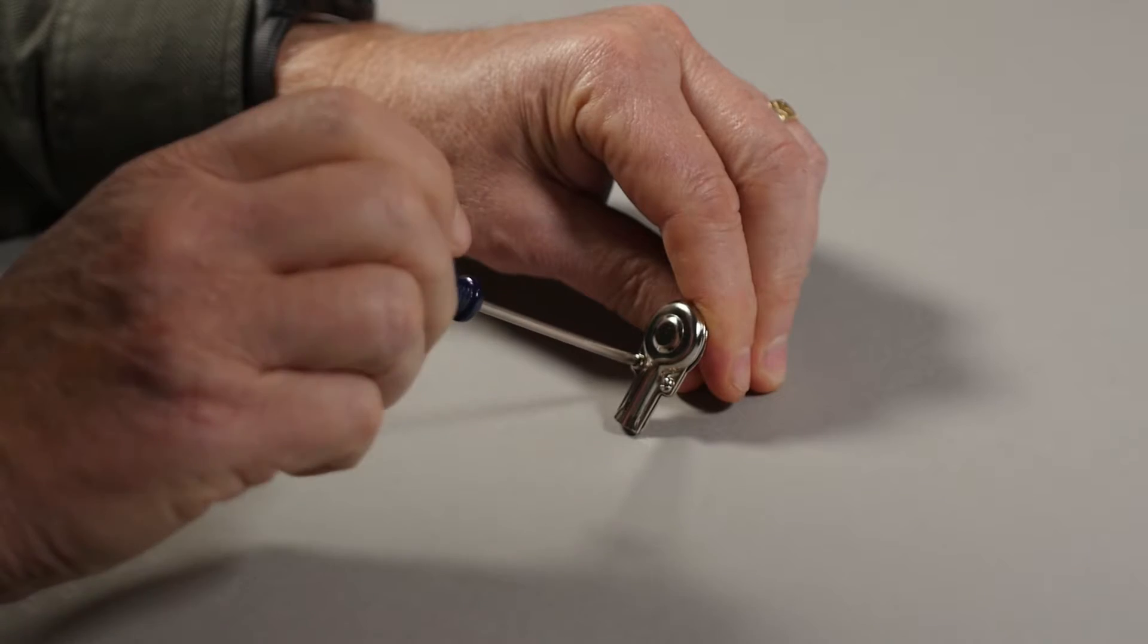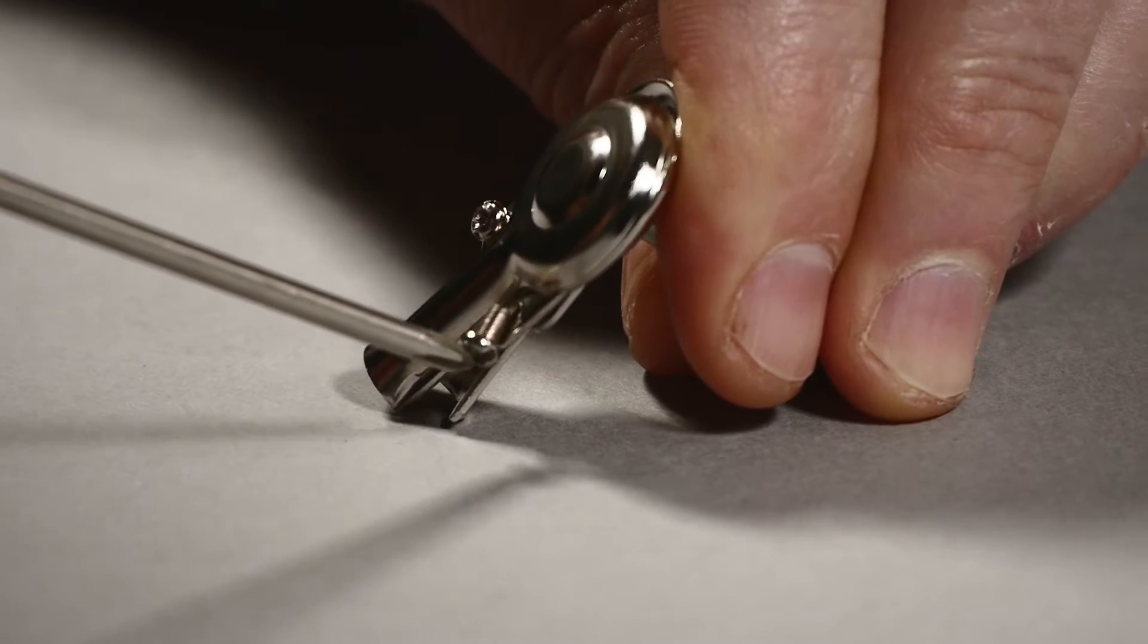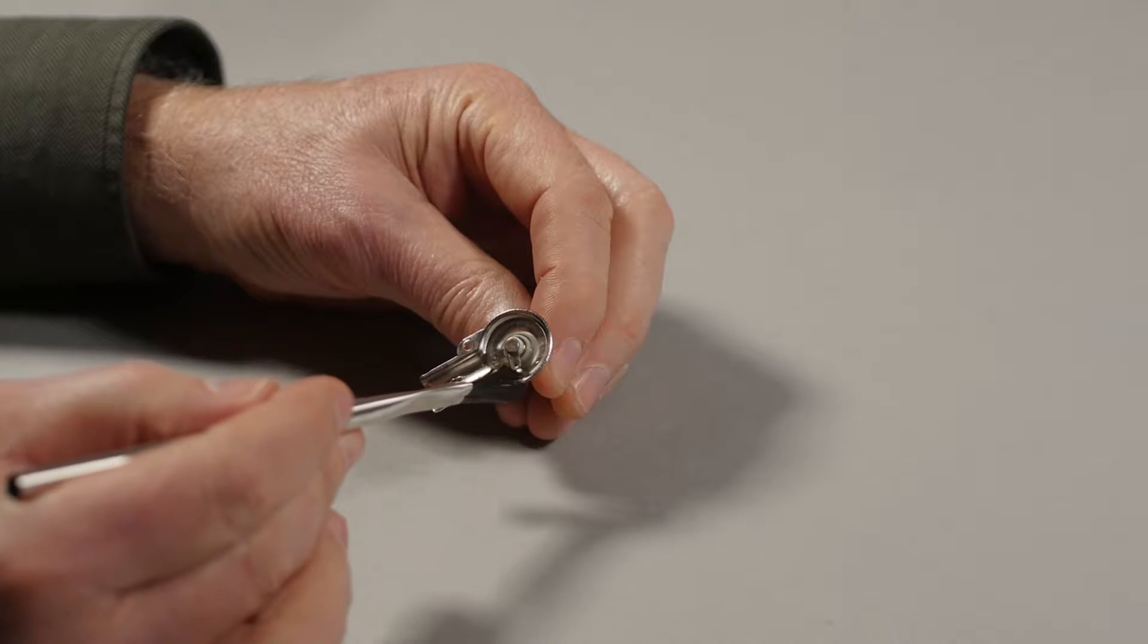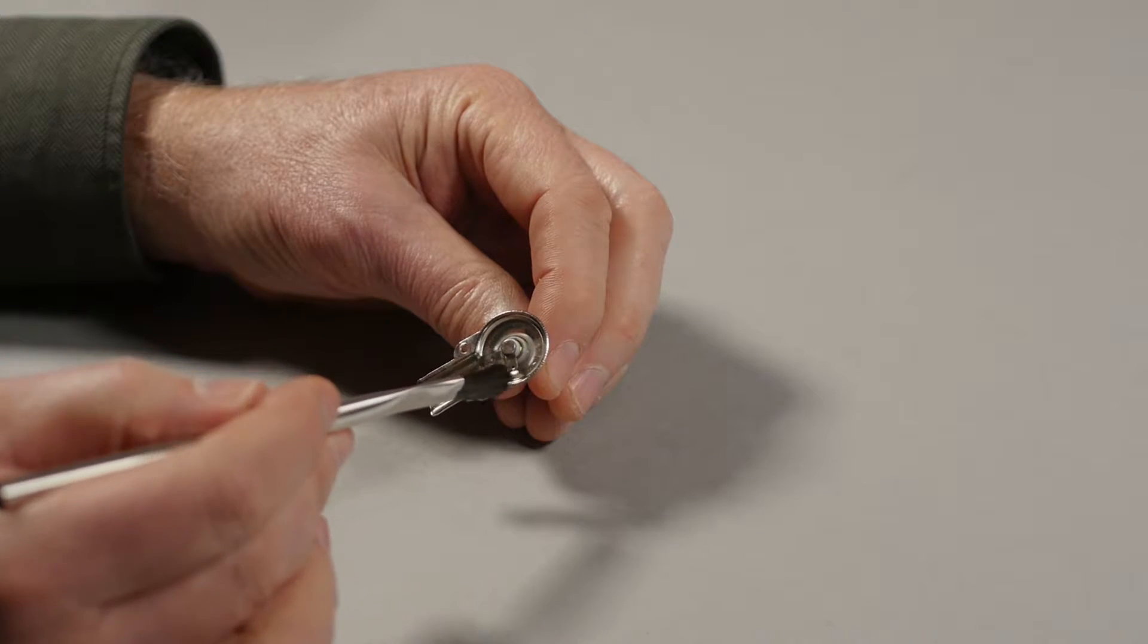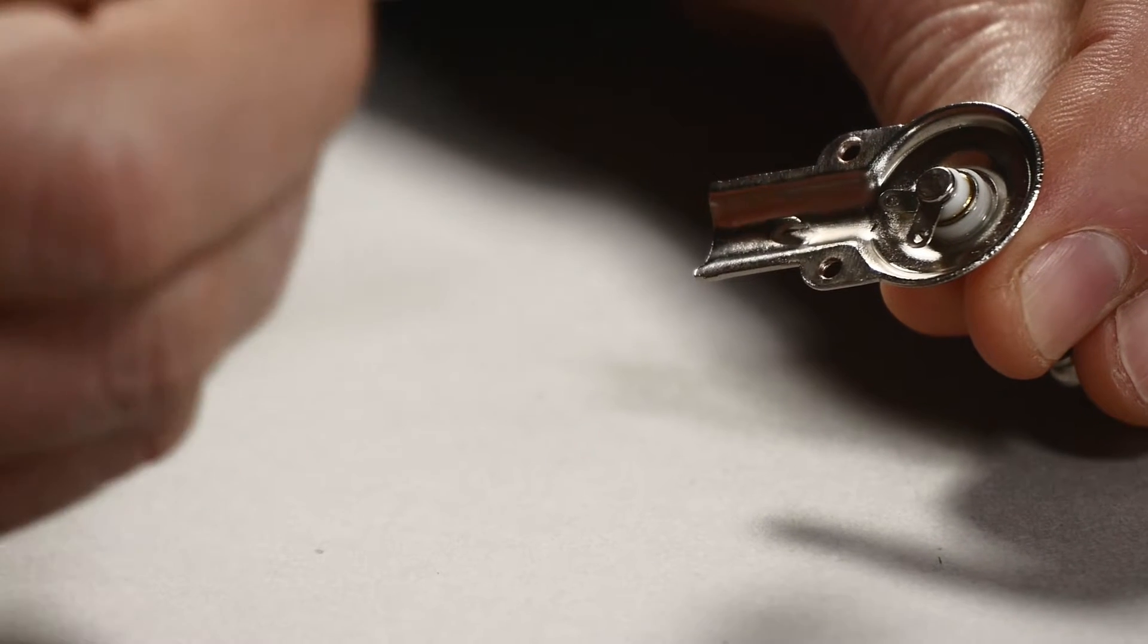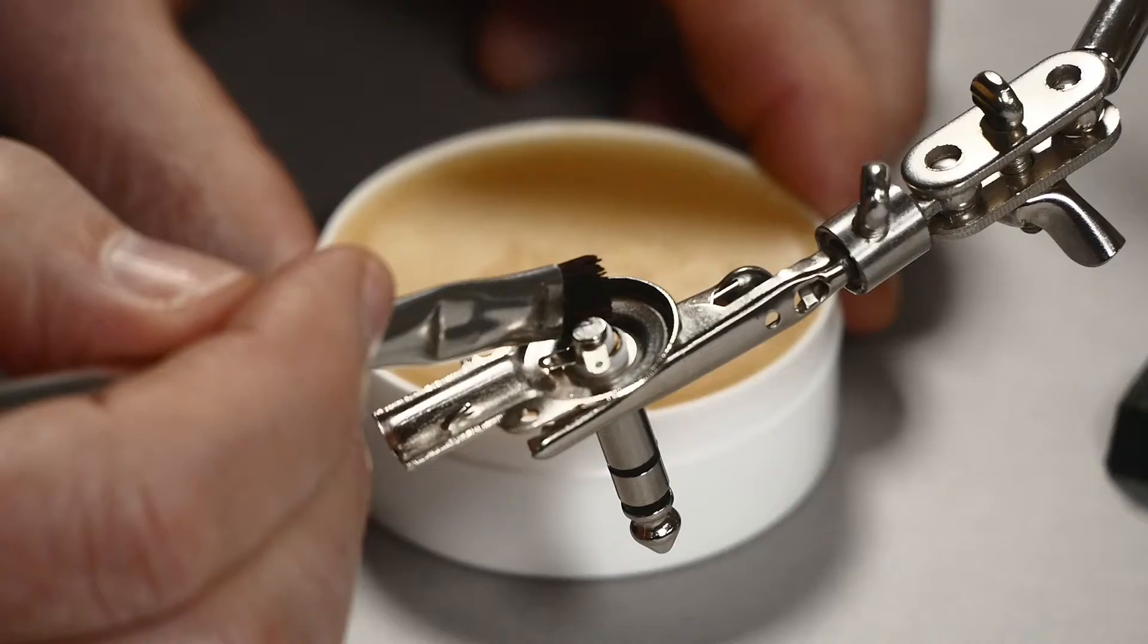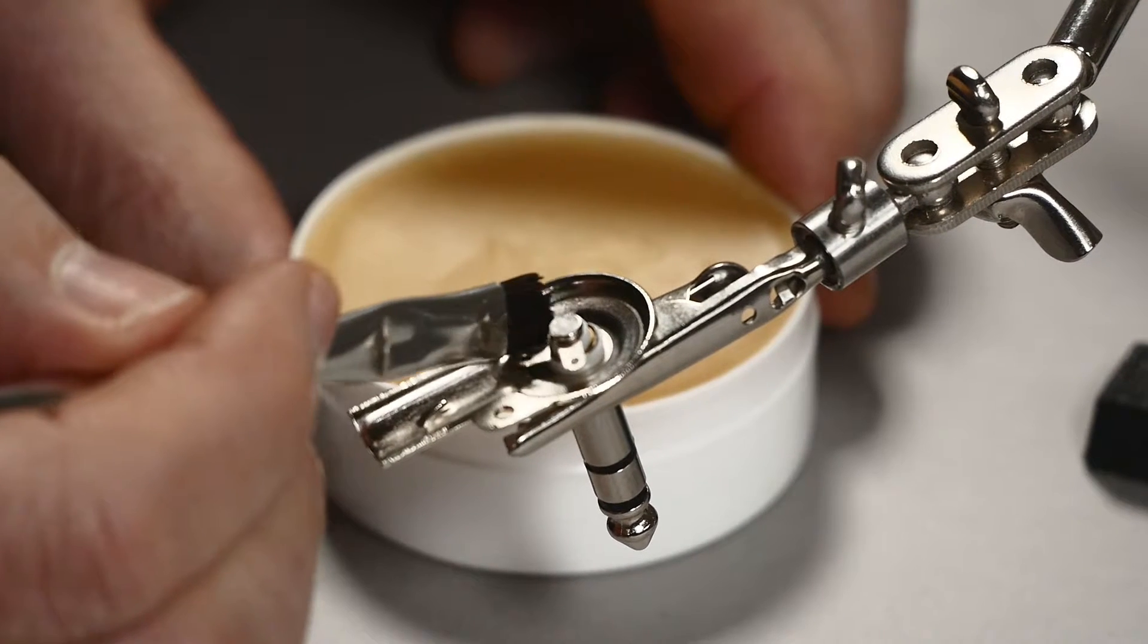Open the connector body to expose soldering surfaces. Clean surfaces to be soldered with isopropyl alcohol to eliminate any oxidation or residue buildup. Apply solder paste to each connector solder tab and shell attachment point for added cleaning.